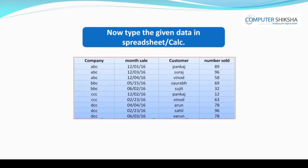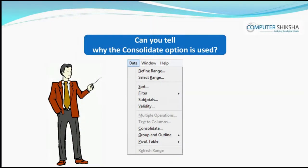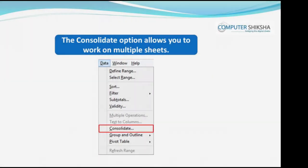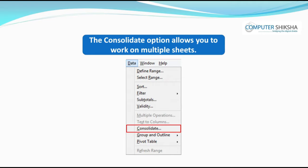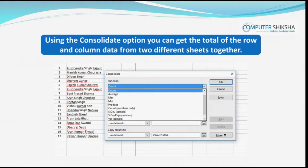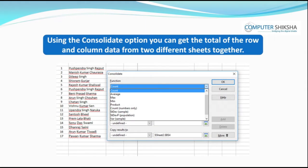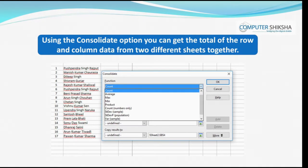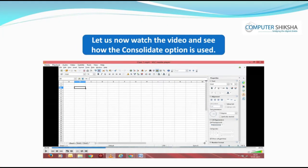Can you tell why the Consolidate option is used? The Consolidate option allows you to work on multiple sheets. So if you want to total the row or column data from two different sheets together, or you want to do some other similar task, you can do so with the Consolidate option. Let us now watch the video and see how the Consolidate option is used.